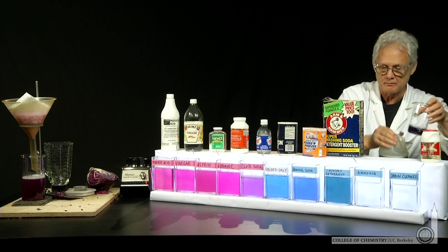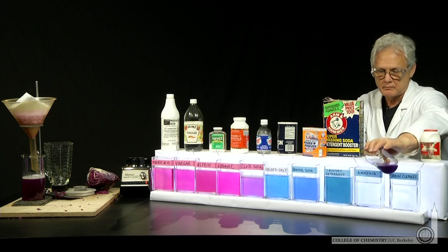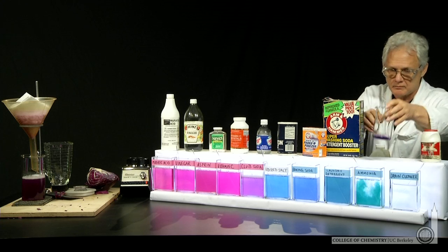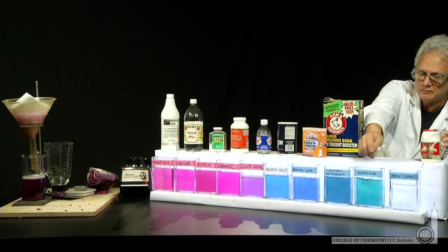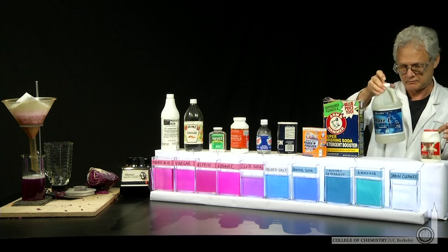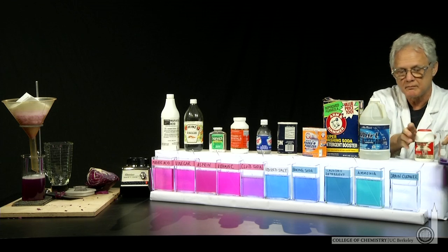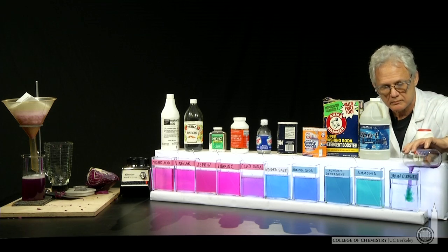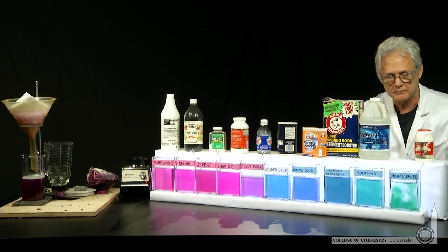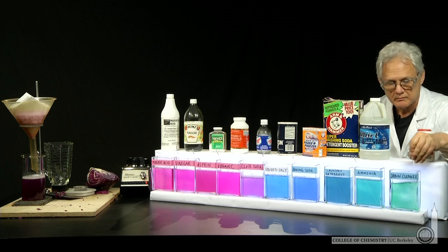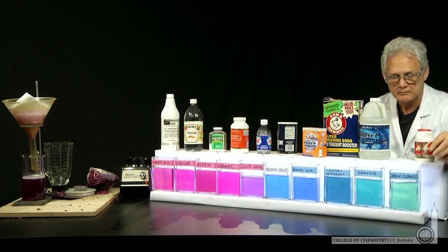Household ammonia, also basic, turns the cabbage juice blue. And drain cleaner, a strong base. Sodium hydroxide, or lye, turns the cabbage juice a dark blue or green.